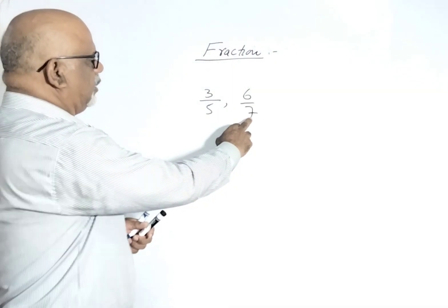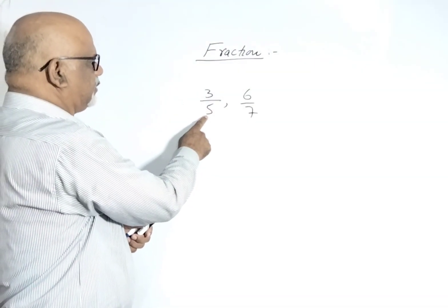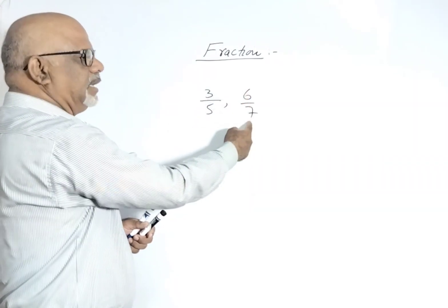So we have to multiply their denominator. The denominator of this fraction, that is 5, we have to multiply and divide with the second fraction.